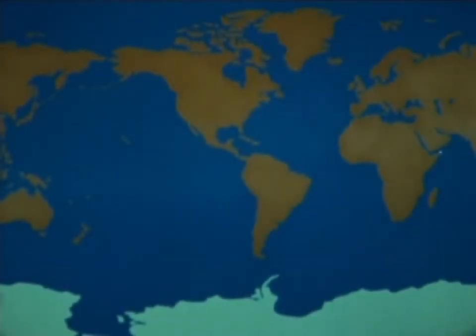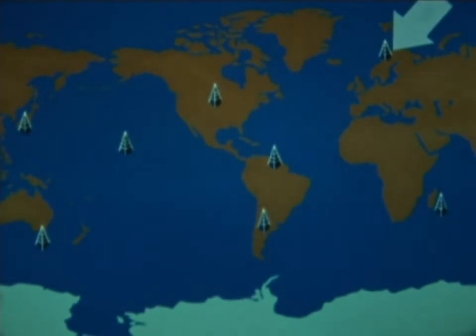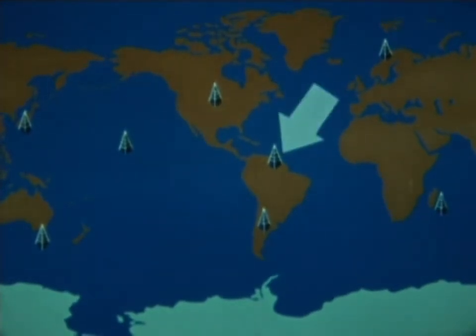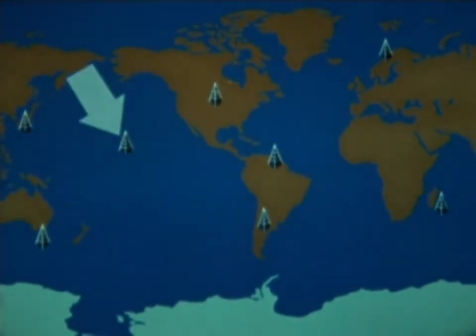To provide worldwide coverage, the Omega System will use eight VLF transmitting stations, one in Norway, another in Trinidad, one in Hawaii, and another in north-central United States.